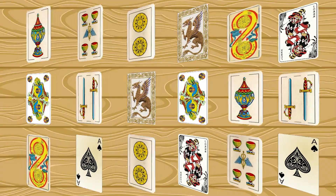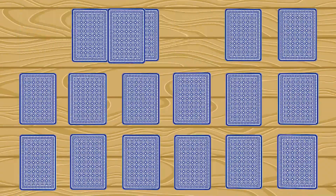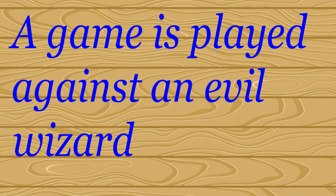Initially, all the cards are faced down and are then shuffled, so that no information is given on their arrangement. With these initial considerations, a game is played against an evil wizard in the following way.